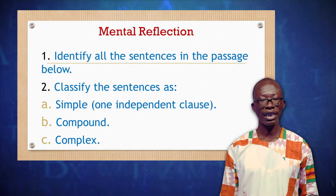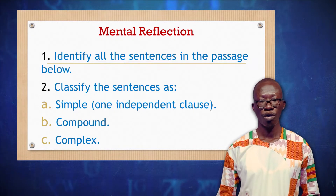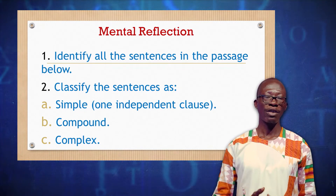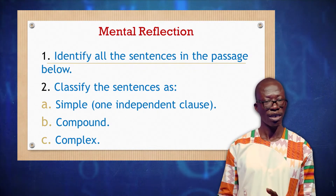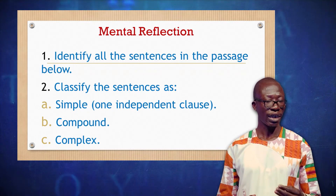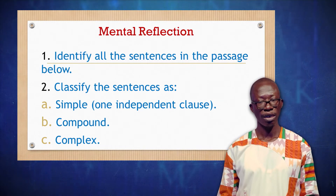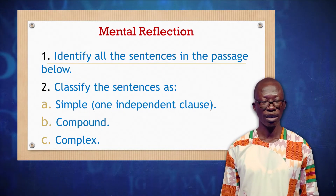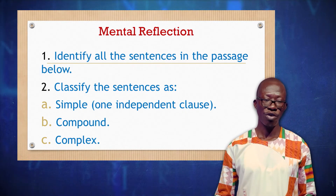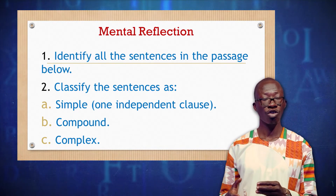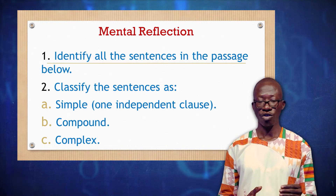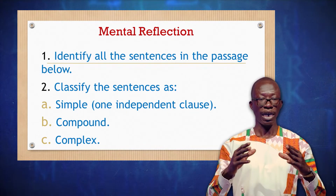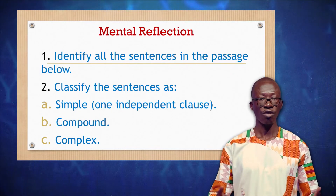The second question says: classify the sentence as simple — that is, one independent clause. So as we read the passage, we will be required to identify whether the sentence is a simple sentence, a compound sentence — you should be able to classify it as a compound sentence if it is — or a complex sentence. So these two questions are going to be the center of our review lesson as we go through the passage.